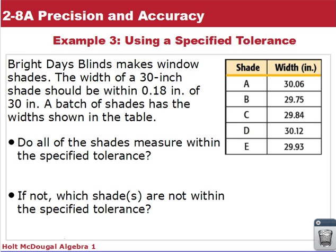Example three is looking at using a specified tolerance. Again, tolerance is how much is allowed difference in the readings here. So Bright Days Blinds makes window shades. The width of a 30 inch shade should be within 0.18 inches of the 30 inch. A batch of shades has a width shown on the table.